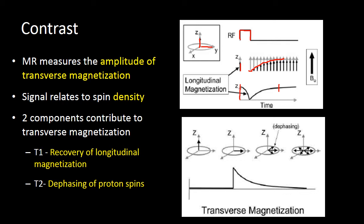One important thing to remember is that we have to have protons in line with the Z-axis to excite them with our RF pulse. Remember that for later.